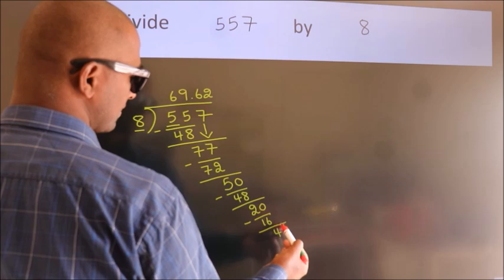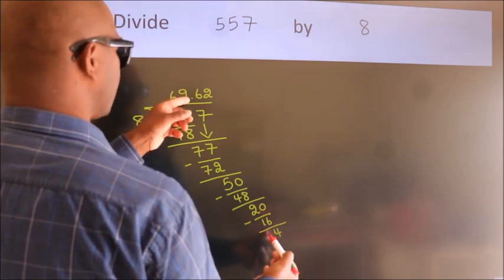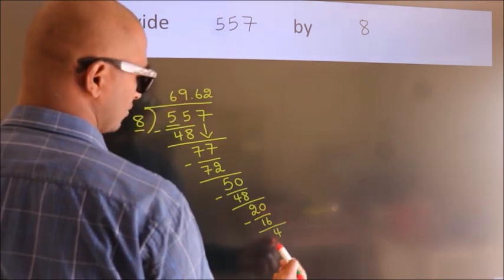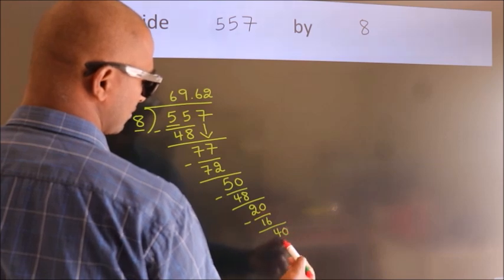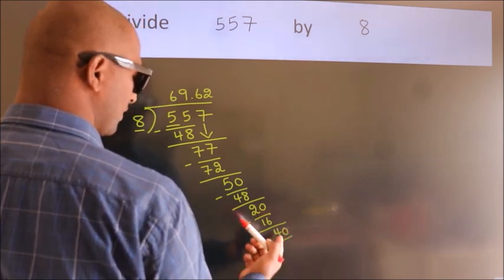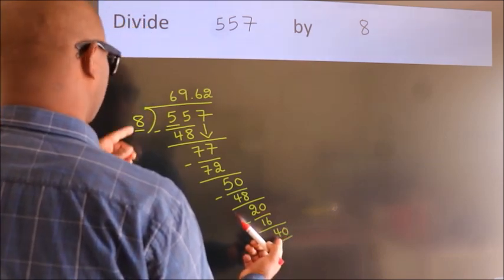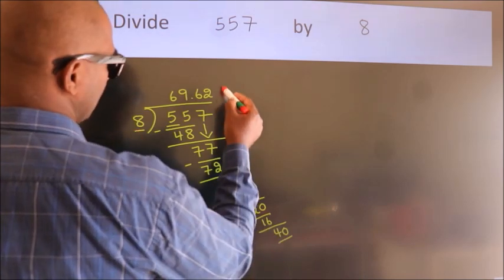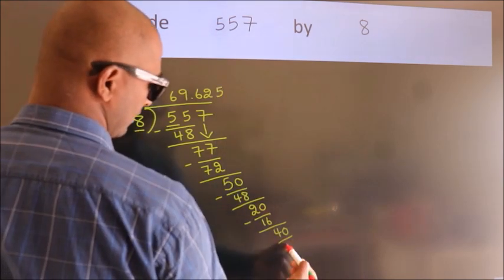After this, we already have the decimal, so directly take 0. So 40. When do we get 40 in the 8 table? 8 times 5 equals 40.